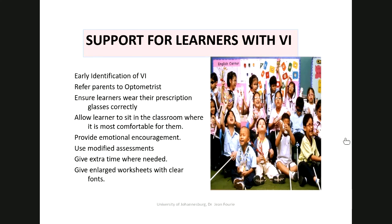Ensure that learners wear their prescription glasses — if a child has been prescribed glasses to read, there is a reason for it; they will not be able to read clearly without them. Often wearing glasses for children is itself a problem because other children will bully and tease them. Allow learners to sit in the classroom where it's most comfortable for them — sometimes they'll want to be in the front where they can see clearly, but a child with albinism might want to be at the back in a dark corner if they're light sensitive. Be aware of what difficulty the child has so they can be seated in the correct place.